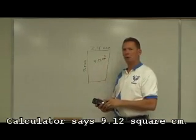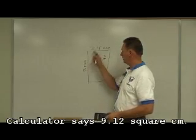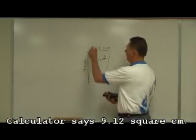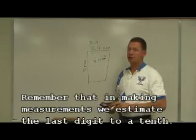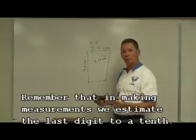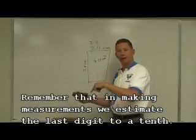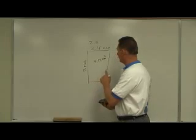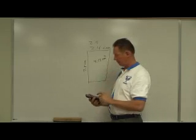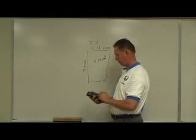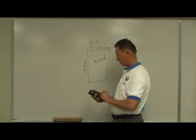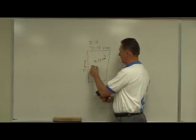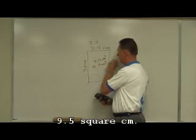The problem with that is if you go back and you look at how we made these initial measurements, 2.4 plus or minus a tenth, could it have been 2.5? Yes, it could have been. We guessed it 2.4. Maybe your neighbor would have guessed it at 2.5. Remember that last digit, it's called a doubtful digit. So if that's the case, let's do the calculation using that one instead. The area using this measurement and that measurement would have been 9.5 centimeters squared.